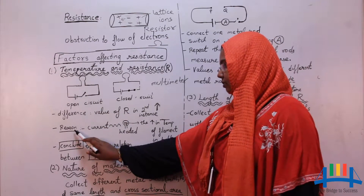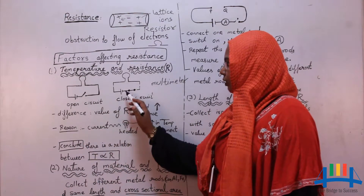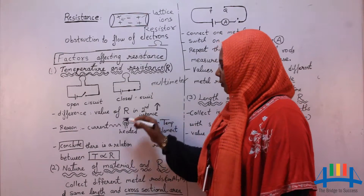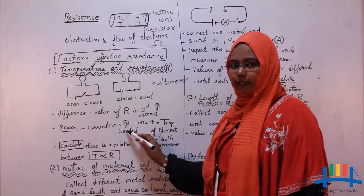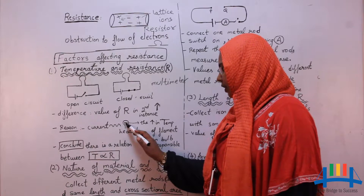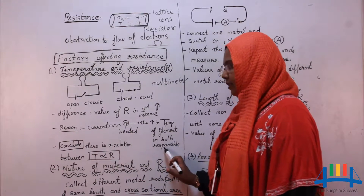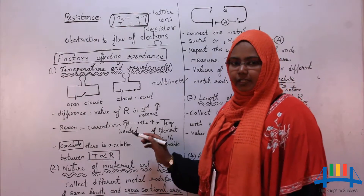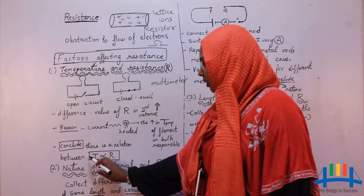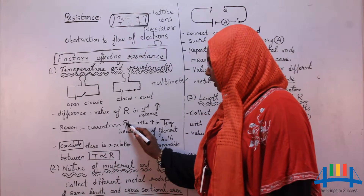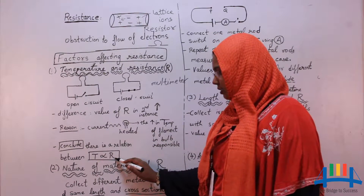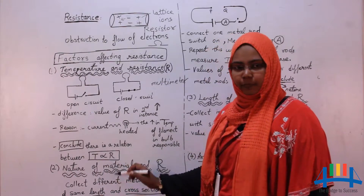The reason for this increase in resistance is: when the current flows through the circuit, the bulb gets heated, and this increase in the temperature of the filament in the bulb is responsible for the increase in resistance. So we can conclude that when temperature increases, resistance also increases, and vice versa — when temperature decreases, resistance also decreases.